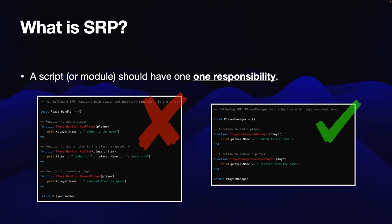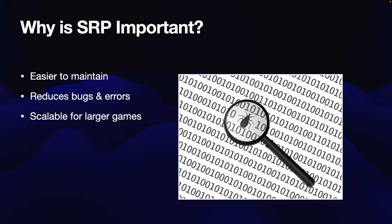SRP is simple. Each script or module should have just one responsibility or reason to change. This helps keep your code organized and easier to manage. When scripts have too many responsibilities, they become difficult to maintain, leading to more bugs and errors. By using SRP, your code becomes modular and easier to debug, which is crucial as your game grows.